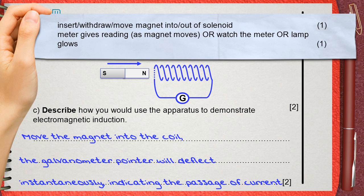The second mark is for what you will observe. Meter gives reading as magnet moves, or watch the meter, or you can put a lamp and say the lamp will glow. This is your observation and this is the second mark.